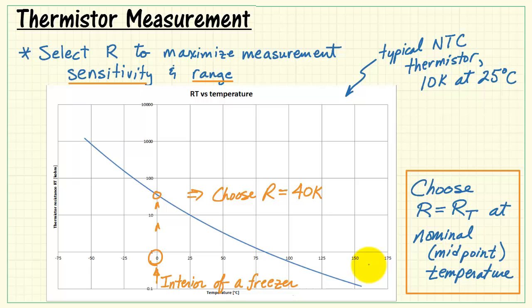And that means we should choose our fixed value resistance as 40k as well. In this way, we maximize both the sensitivity of the measurement as well as the measurement range.